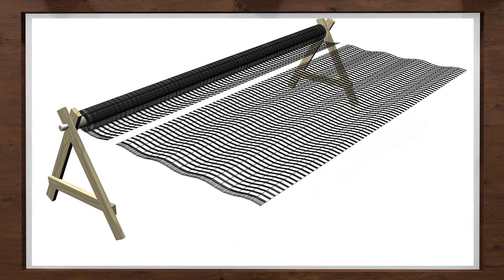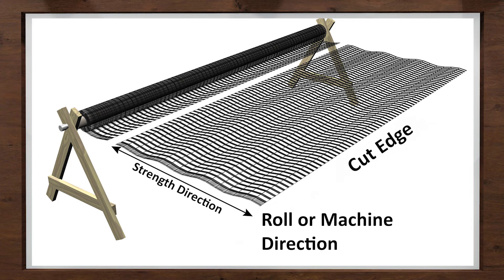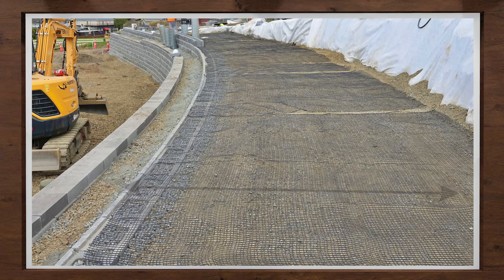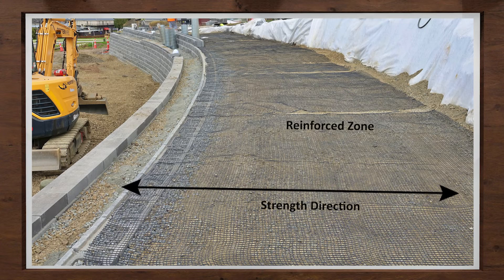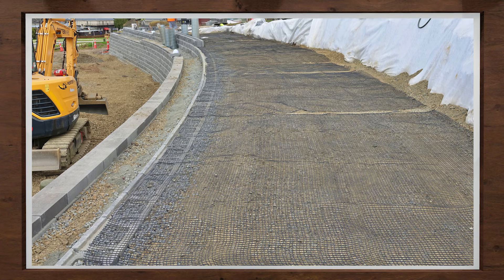When using large commercial rolled geogrid, make sure you are aware of the proper strength direction of the grid you are using. Contact your material supplier for assistance. The strength direction of the grid always goes into the hillside, which is perpendicular to the face of the wall. If installed incorrectly, the grid will only be at about half strength of what is needed. This is the most common mistake during installation.